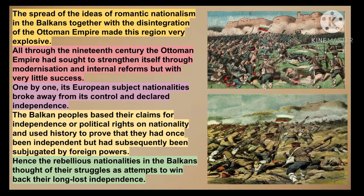In the Balkan region, people started saying that they want freedom from the Ottoman Empire. Earlier, the people of the Balkan region were actually independent, but the Ottoman Empire had captured this region and put it under its control. With the spread of Romanticism, people now wanted independence and freedom again. All through the 19th century, the Ottoman Empire tried to strengthen itself through modernization and internal reforms, by adopting modern techniques, but they were not successful at all.